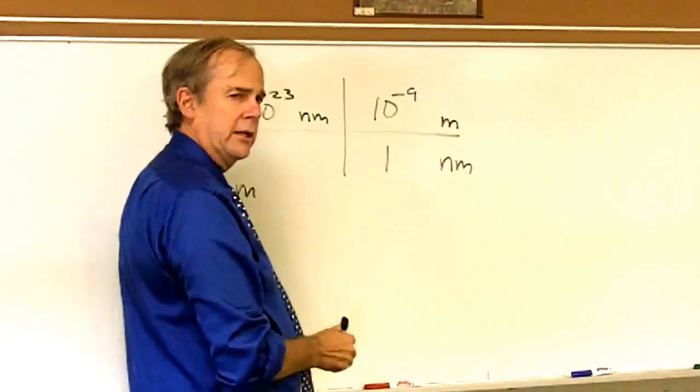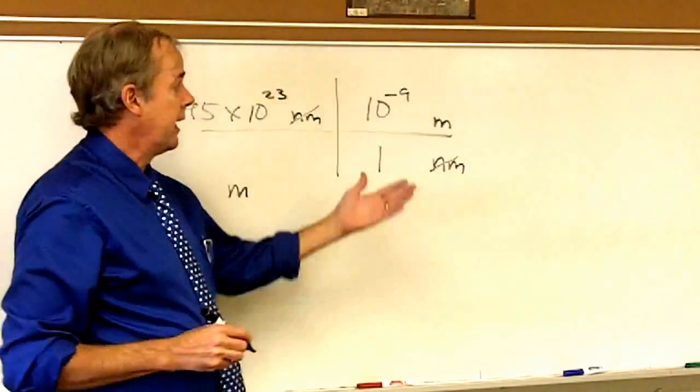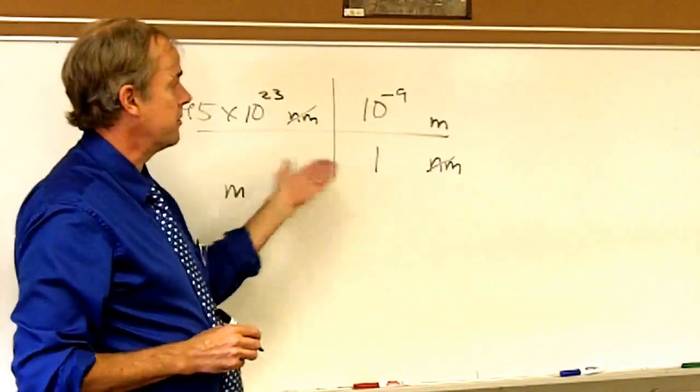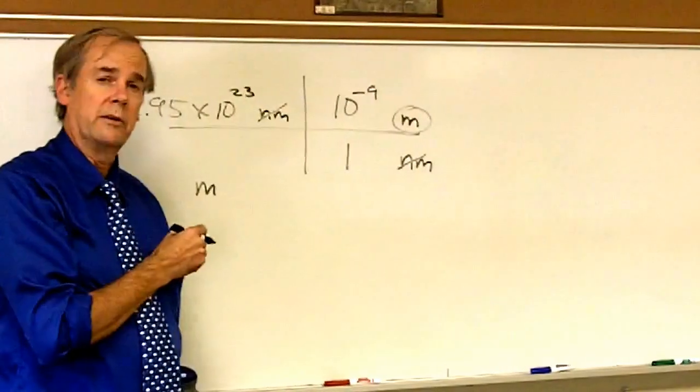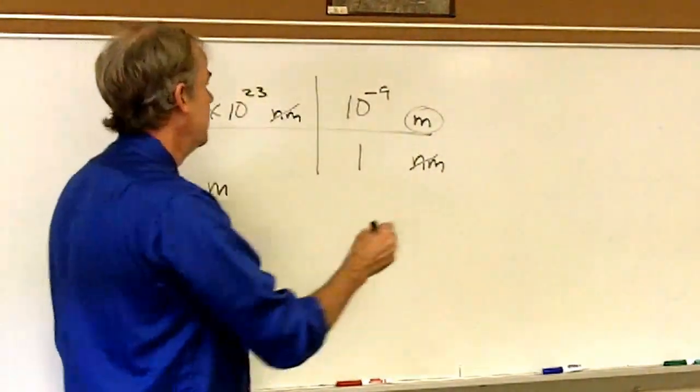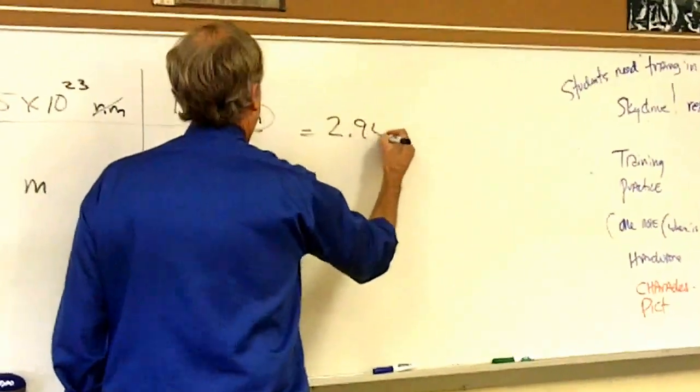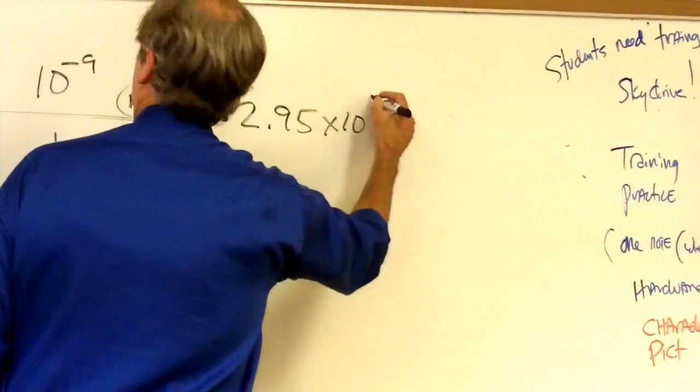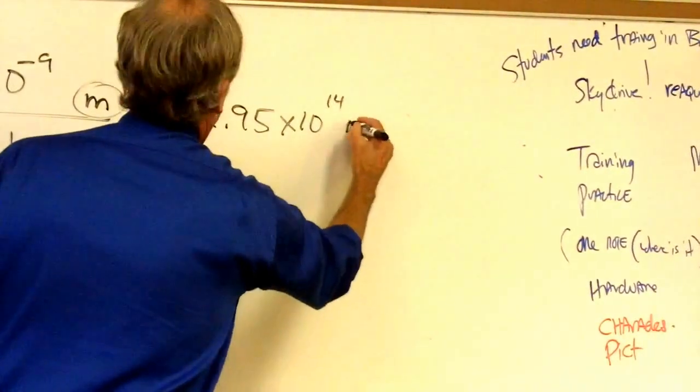The units do change. I no longer have nanometers as units. I have successfully converted to units of meters, which are the units I was trying to convert to. And the number would end up being 2.95 times 10 to the fourteenth meters.